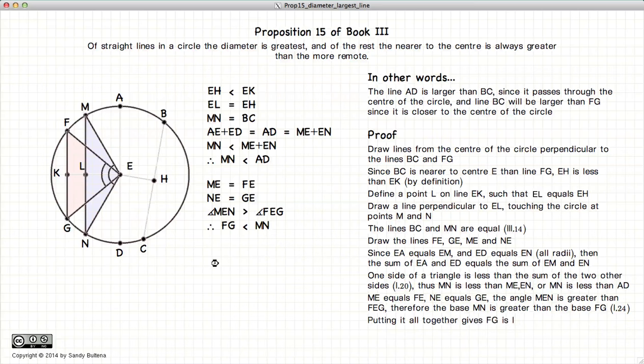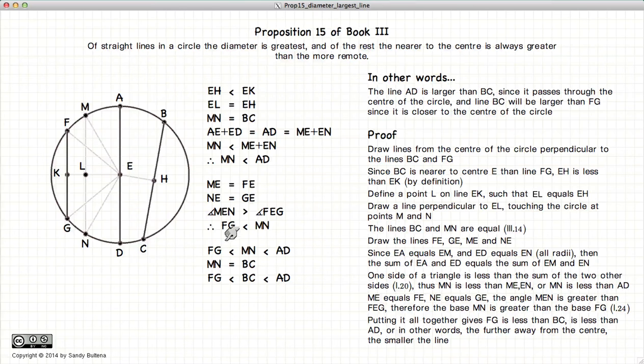And if we put them all together, we basically have that FG is less than MN, and MN is less than AD. However, MN in this case was equal to BC, which we've already established.